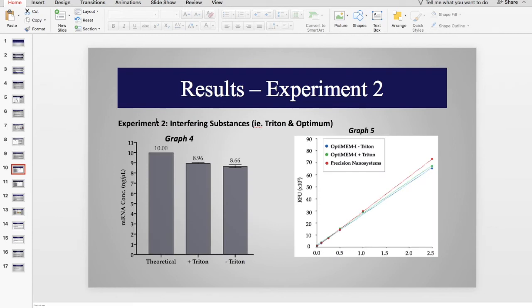Next, we wanted to see if there were any interfering substances, even that might be present in laboratories, that could affect the measurements and also affect gene therapy and vector production. And we saw that two major interferences were Trident and Optimum.